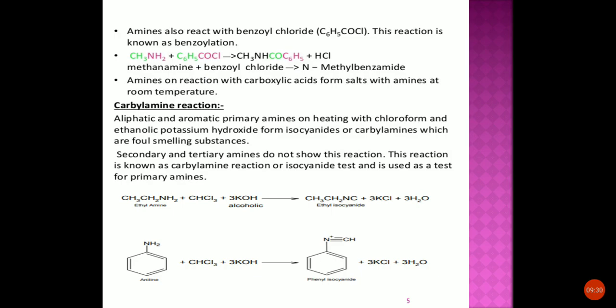To summarize, today we have seen three reactions of amines: acylation — substitution of H by COCH₃ group; benzoylation — substitution of H by COC₆H₅ group; and the carbylamine reaction — reaction of primary amines with chloroform and ethanolic KOH to give isocyanides, used as the isocyanide test or carbylamine test for primary amines. That is all for today's session. Thank you.